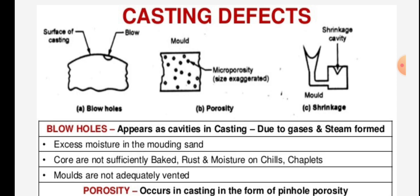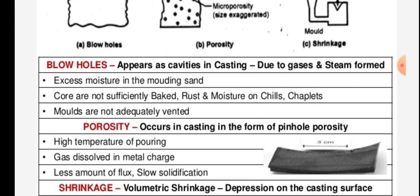The first defect is blow holes. Blow holes appear as cavities in the castings due to gases and steam formed. The second defect is micro-porosity, where the size is exaggerated in the mold. The third defect is shrinkage, where a shrinkage cavity forms in the mold. Blow holes are caused by excess moisture in the molding sand, cores that are not sufficiently baked, rust and moisture on chills, and chaplets.